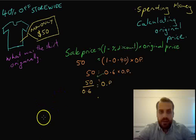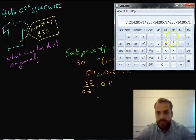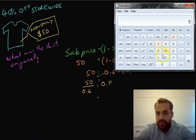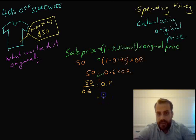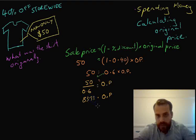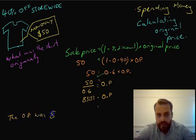And you can type that straight into your calculator and see what we end up with. 50 divided by 0.6. Okay, and that's going to give us 83.33. Okay, so we can finish this whole thing by saying the original price was $83.33.